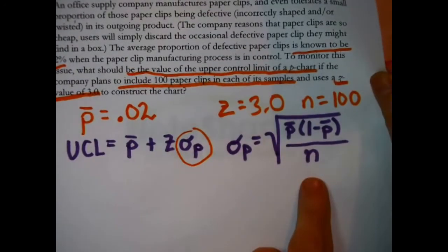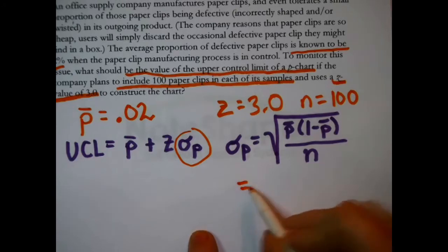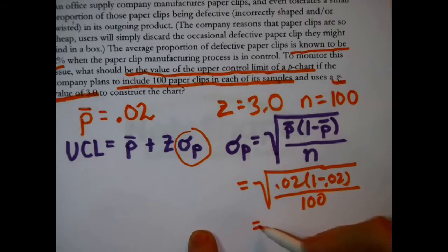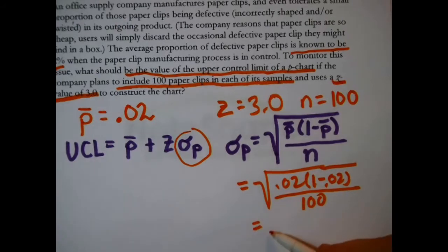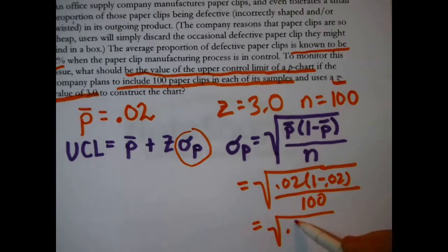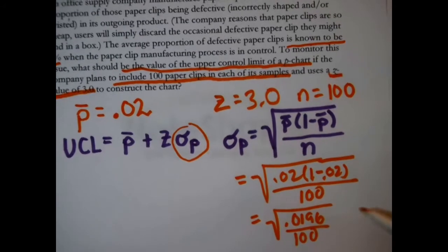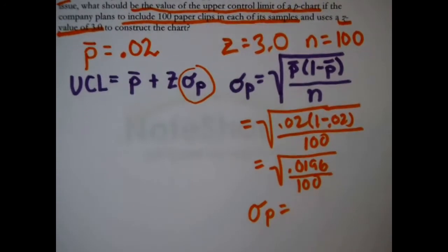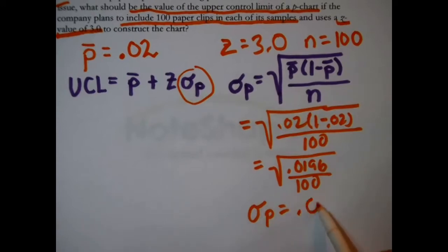So this equals 0.02, there's that, times one minus 0.02, or 0.98, divided by the one hundred. So I get that's the square root of 0.0196 in the numerator, divided by a hundred, or that the standard deviation in the sample proportions is 0.014.